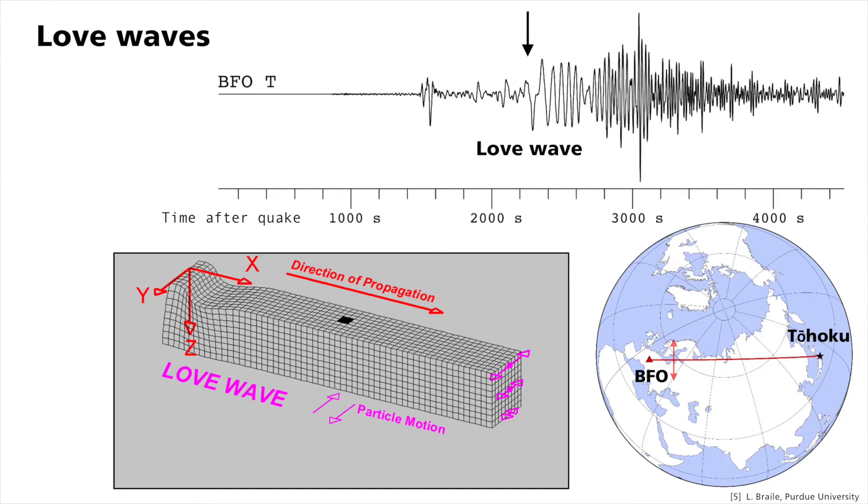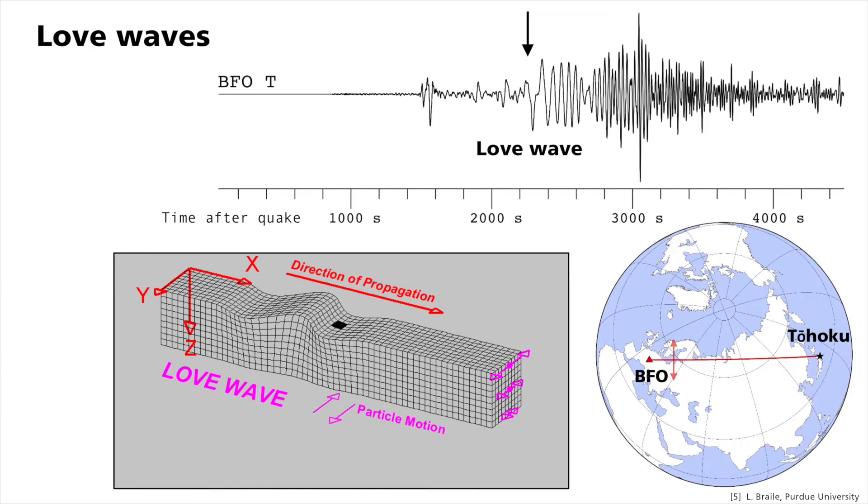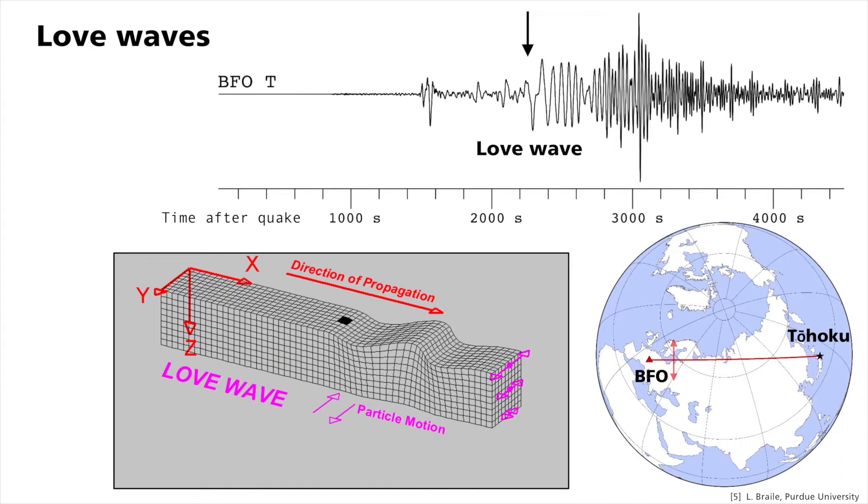Unlike Rayleigh waves, however, Love waves only travel through one layer of the earth, lying on top of another deeper layer with a higher propagation velocity.